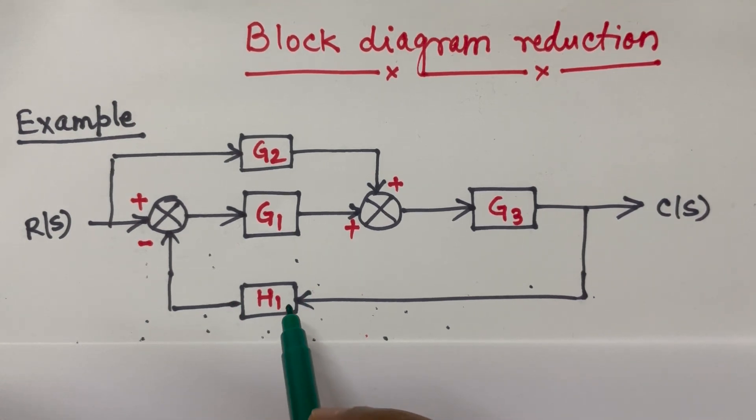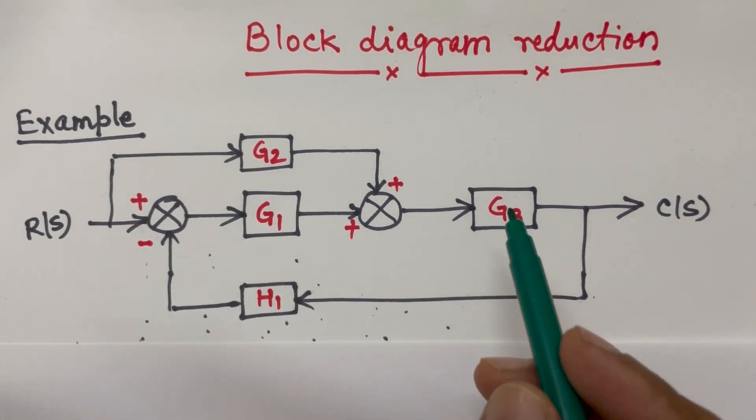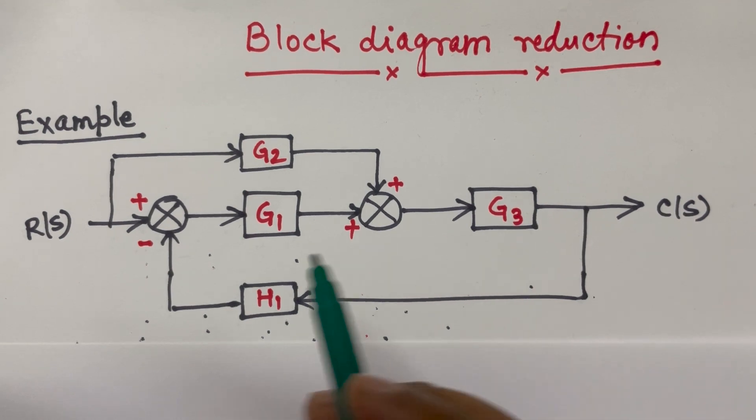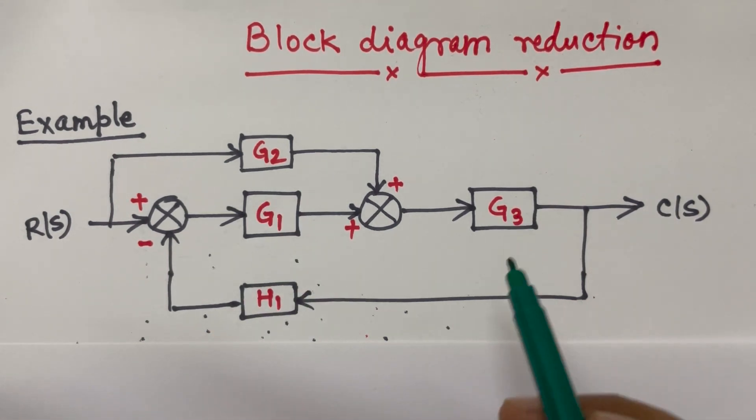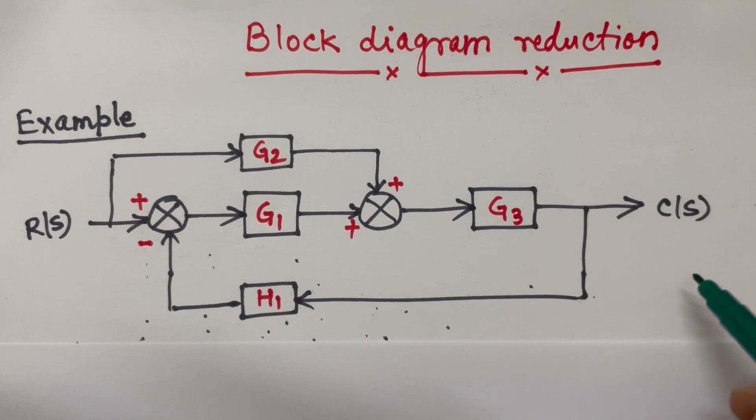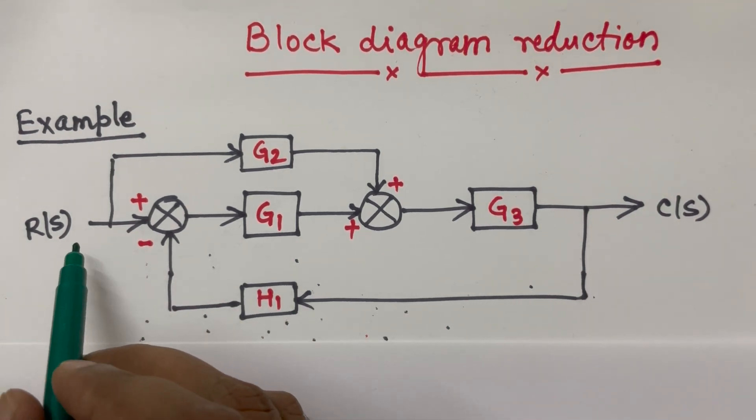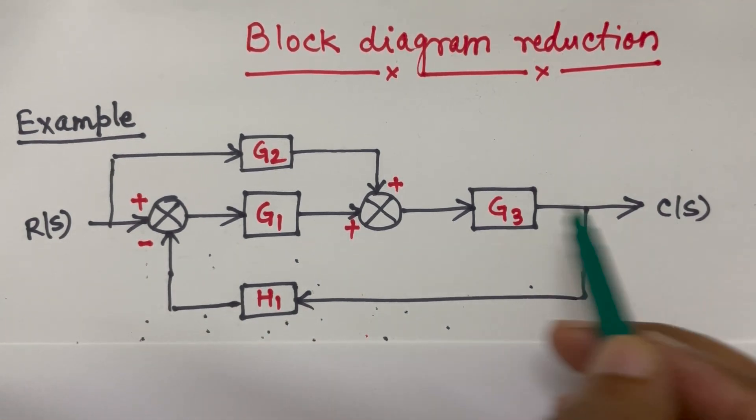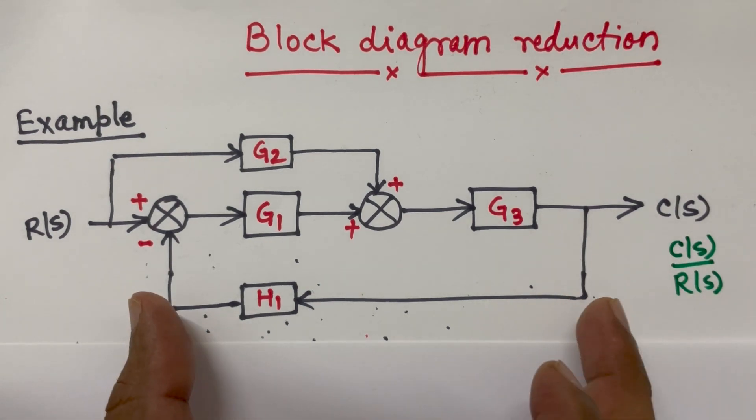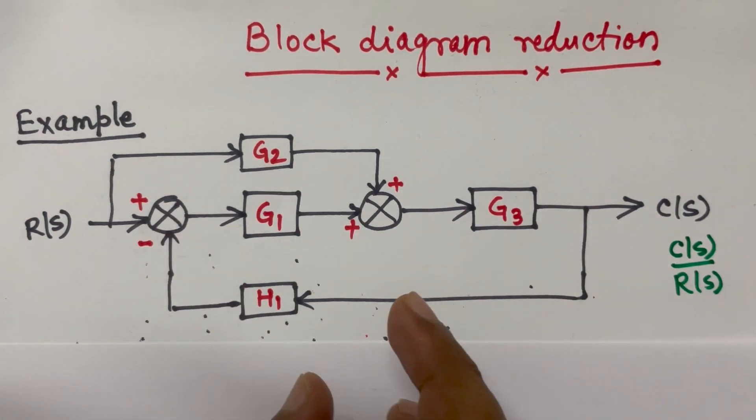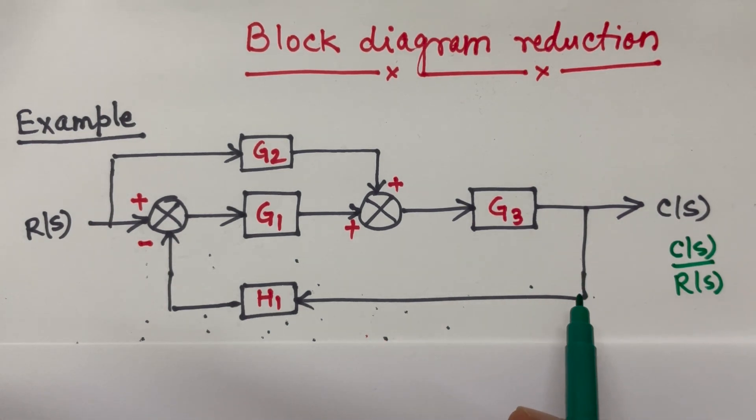This lecture is in continuation with block diagram reduction technique and here I am taking one example where different blocks are given and connected. We have to find out the overall transfer function CS by RS. So the entire combination will be reduced to one block by applying the block diagram reduction rule.